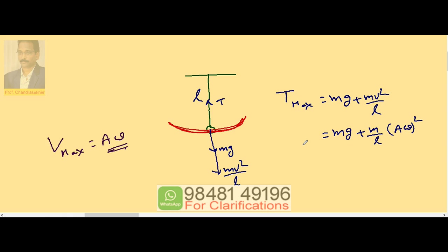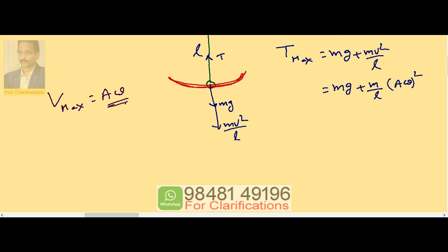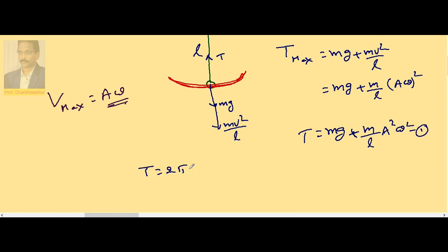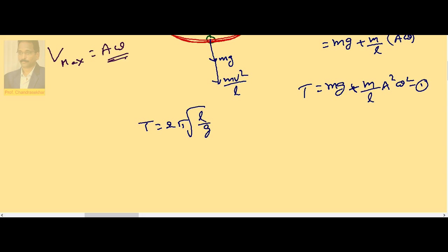Therefore this equation becomes mg plus M by L into A square omega square. Now we know that T is equal to 2 pi into root over L by G or I can write root G by L as 2 pi by T or omega.